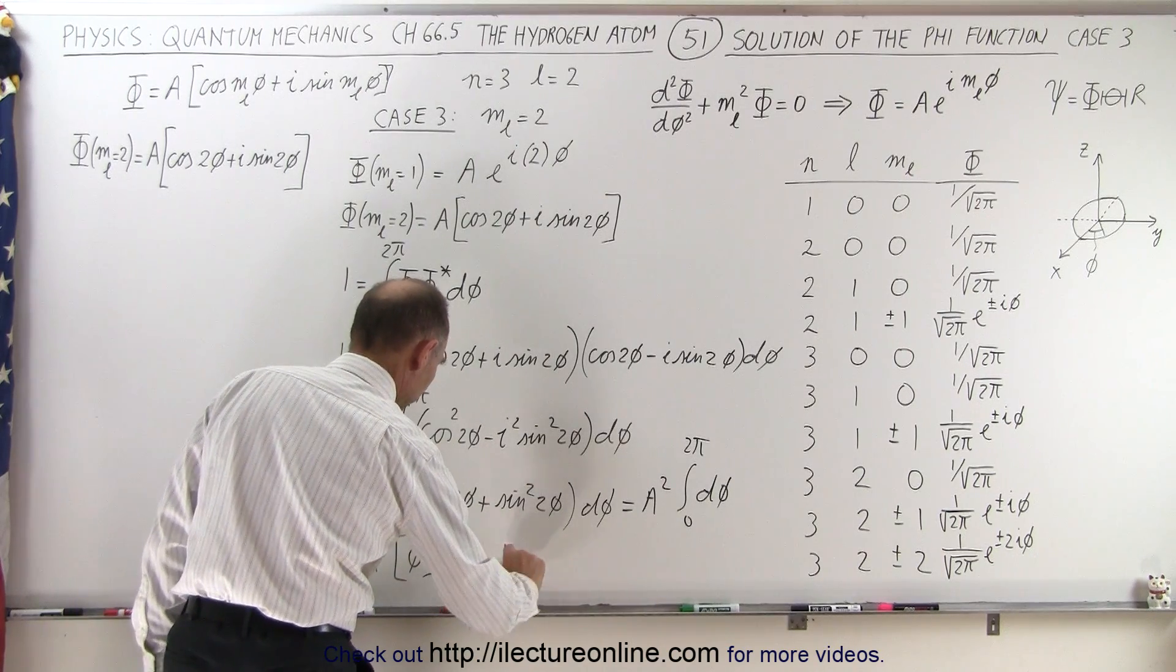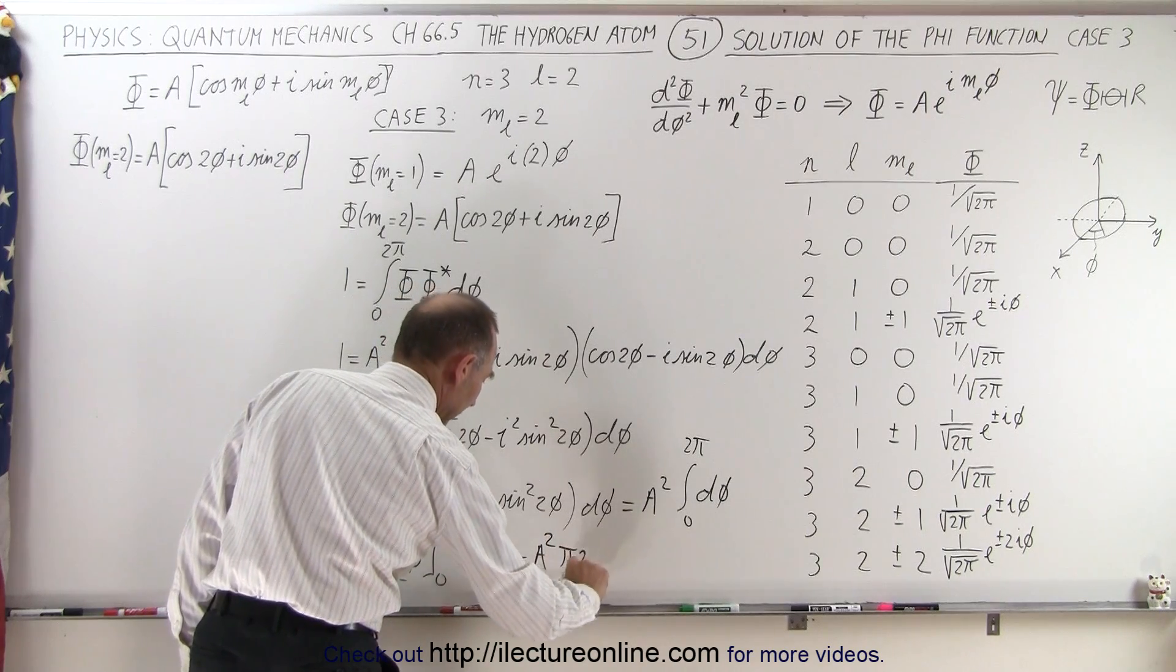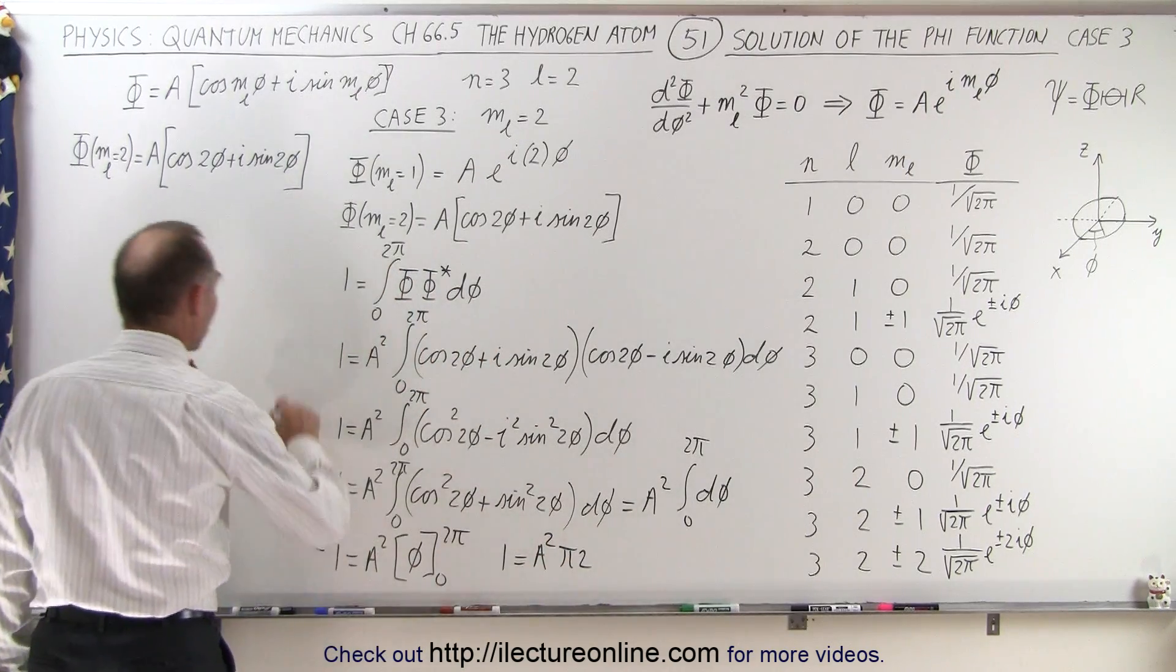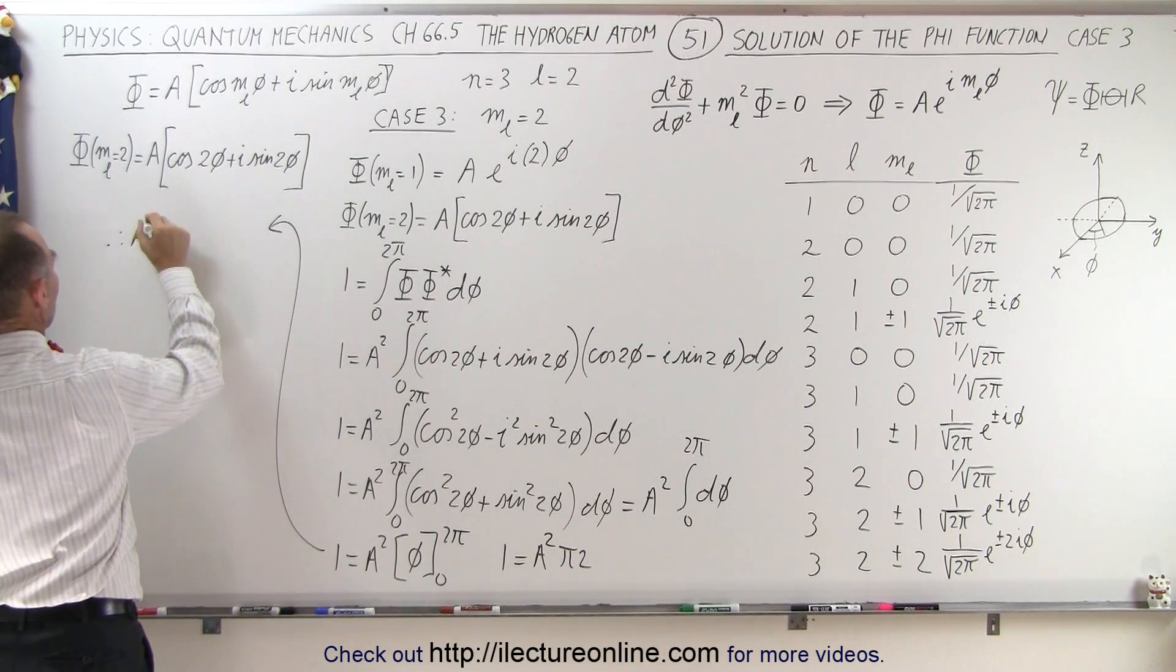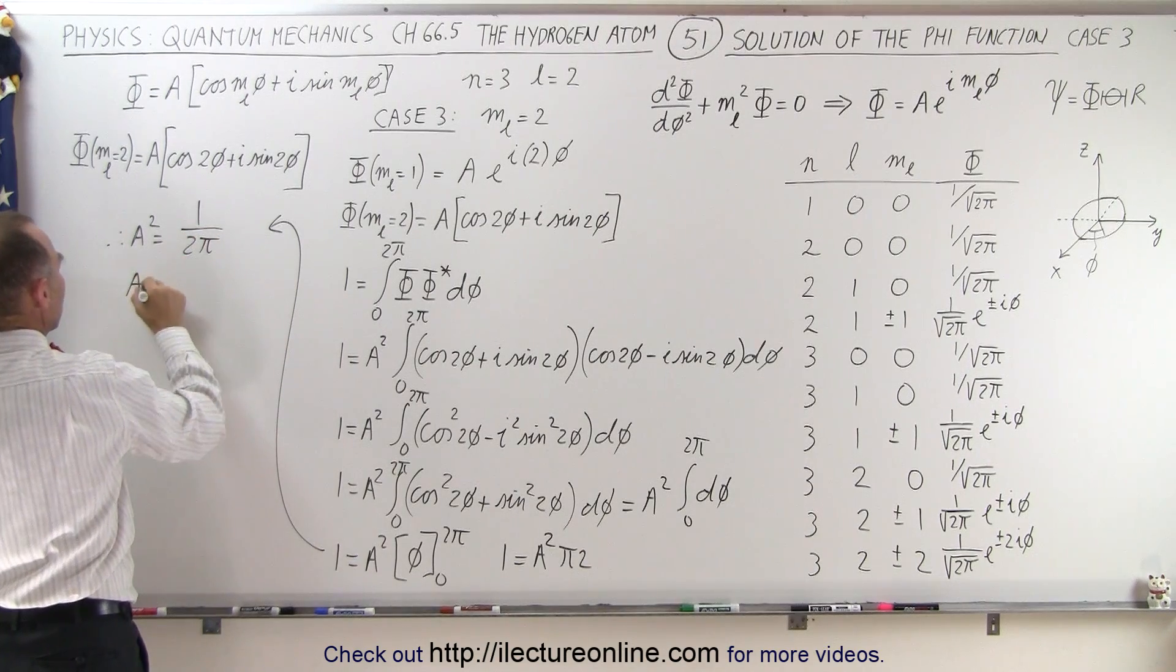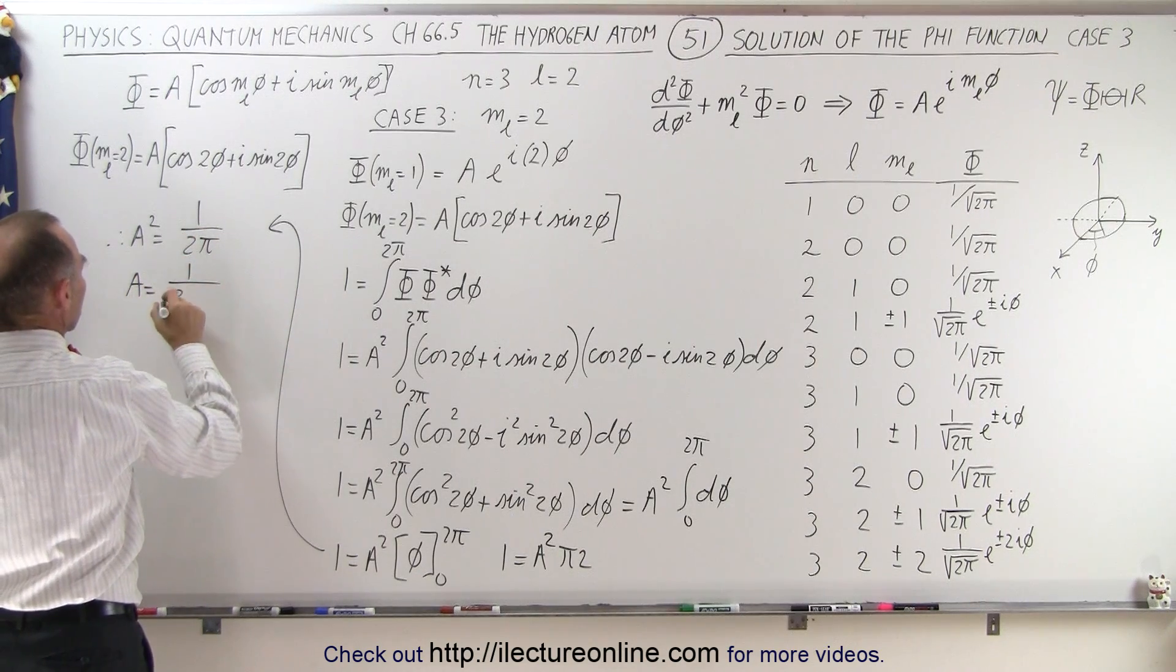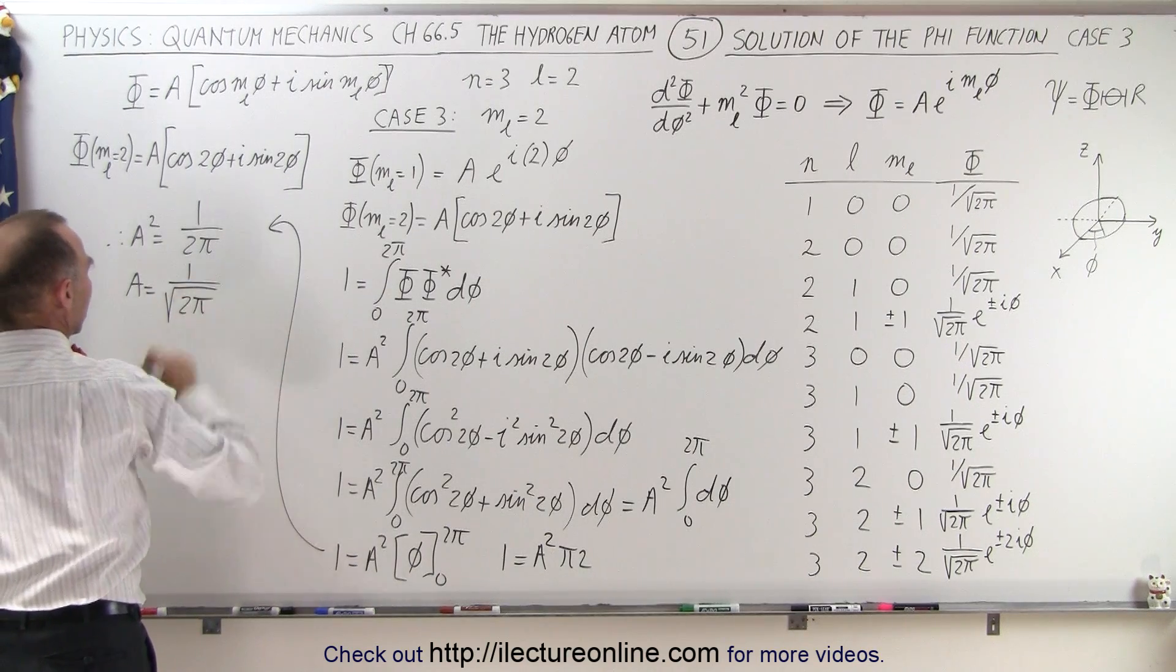Which means that 1 is equal to a squared times 2π. And that means when we then solve for a, therefore we can say that a squared is equal to 1 over 2π, or a is equal to 1 over the square root of 2π. There you go.